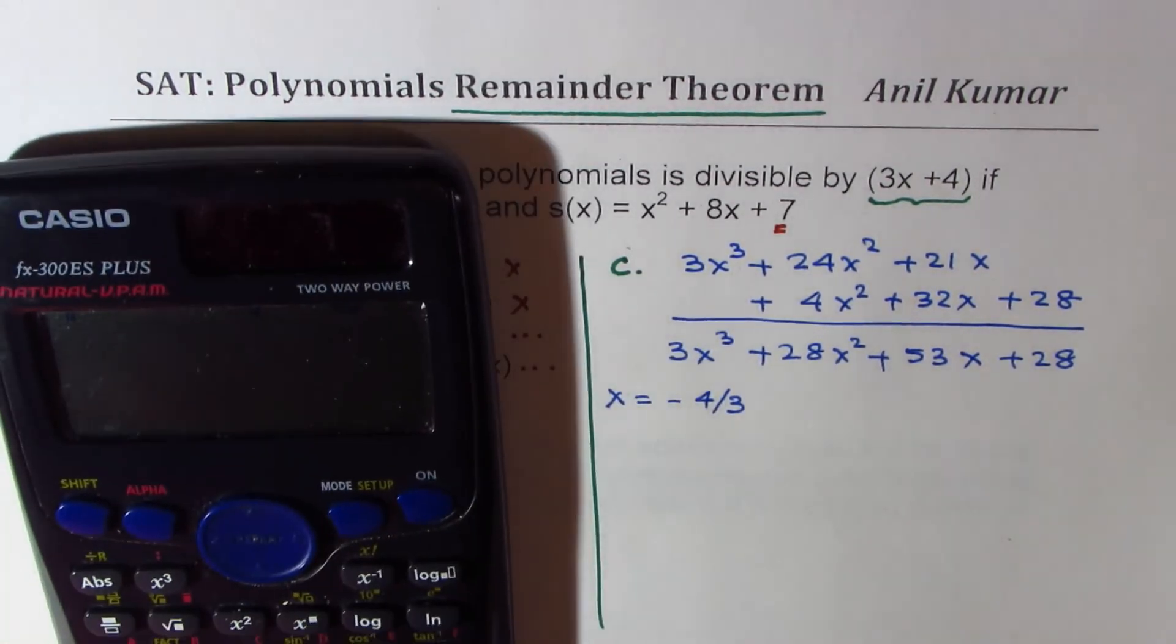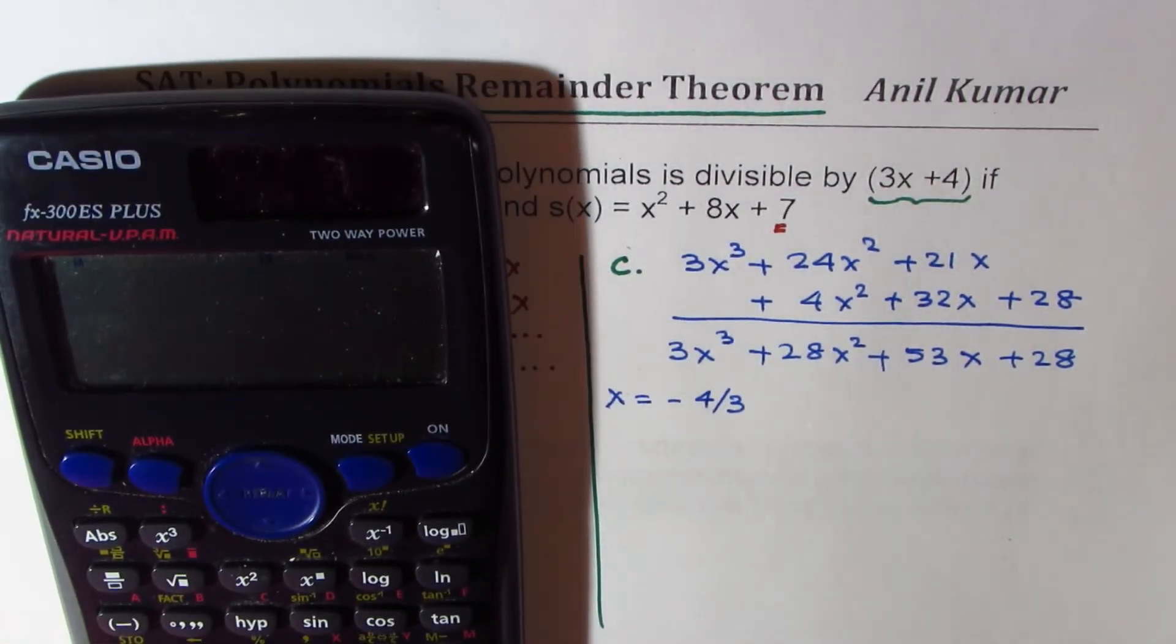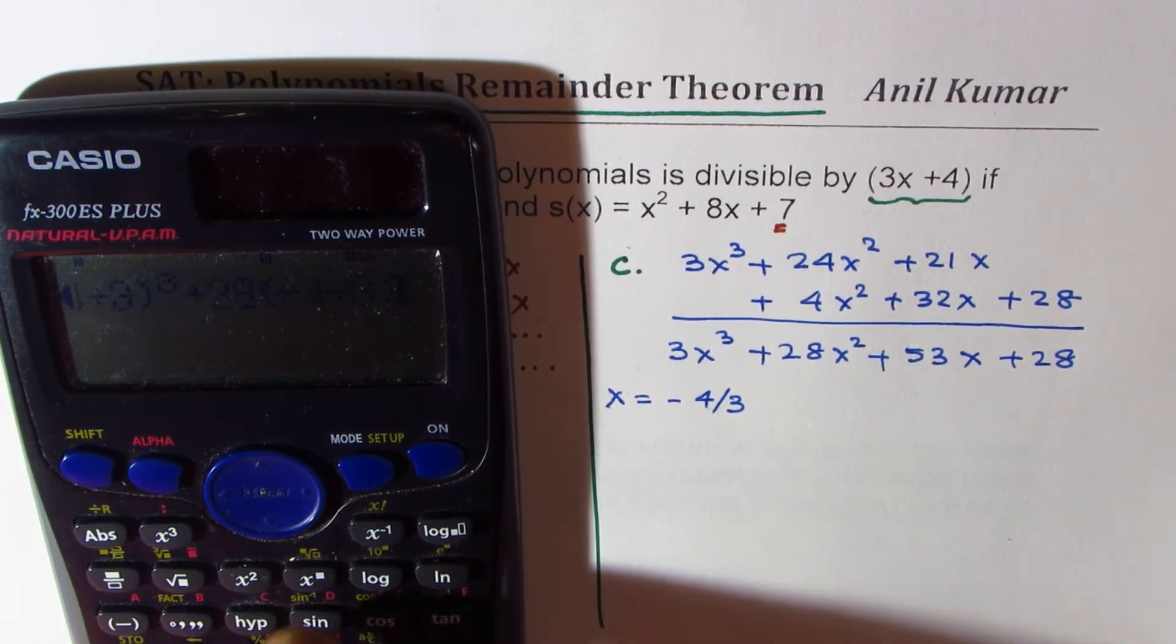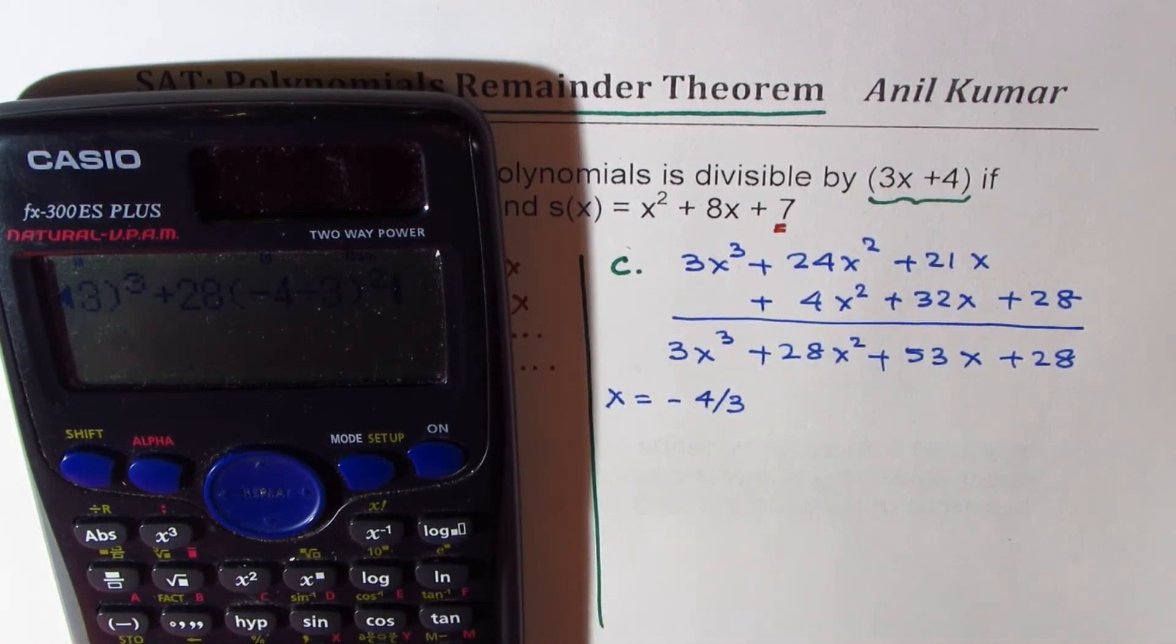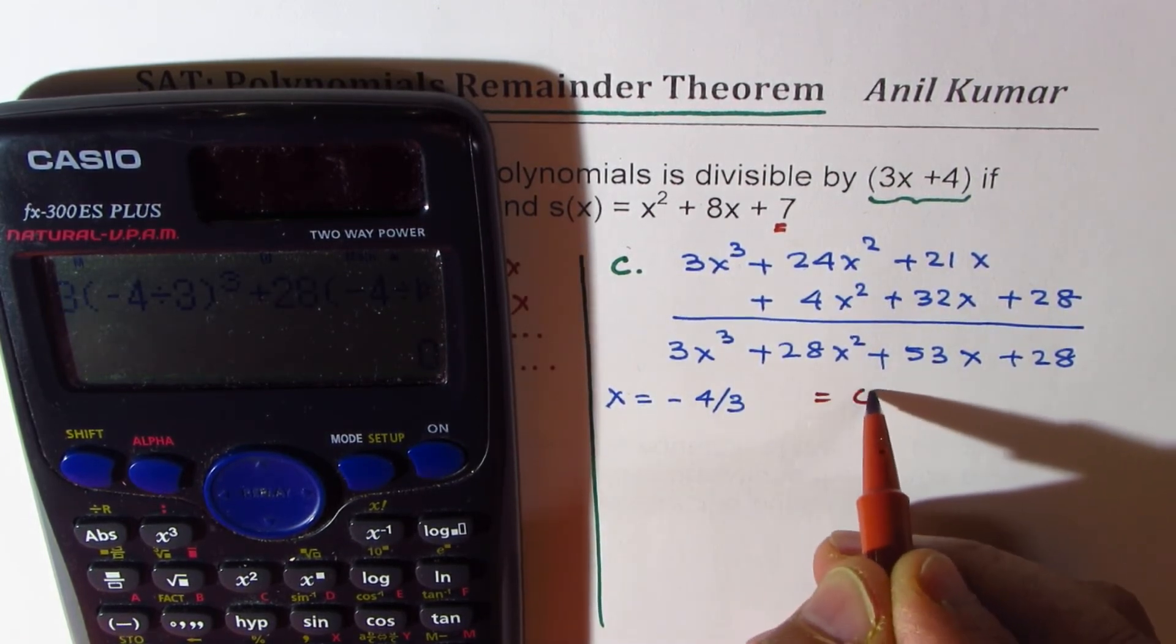So let's figure this out. So we have 3 times (−4/3)³ plus 28 times (−4/3)² plus 53 times (−4/3) plus 28 equals, and that gives us 0. We find that this value is 0.